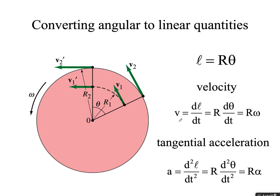Converting back and forth: velocity is equal to r times omega, and the tangential acceleration — this is not centripetal acceleration — is equal to r times alpha. If this object is gaining velocity going from one point to another, it has an acceleration vector acting along this tangent line to the circular path. Centripetal acceleration is always acting toward the center. If angular velocity is increasing, you'd have both centripetal and tangential acceleration components.